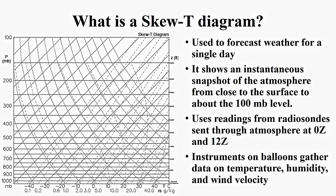Reading a skew-t diagram. A skew-t diagram is used to forecast weather for a single day for a certain location. It shows an instantaneous snapshot of the atmosphere from the surface to about 100 millibars up through the atmosphere.